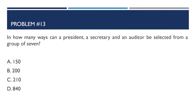Problem number 13: In how many ways can a president, a secretary, and an auditor be selected from a group of 7? The answer is 210. This is an arrangement problem — it's a permutation because positions are given. If you interchange the positions, say the president becomes the auditor and the auditor becomes the president, it's another set, so the order matters.